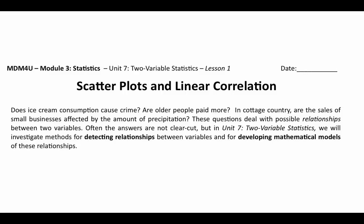Up until now, if you've been following along, we've looked at presenting and collecting data. We've looked at statistics of one variable, including measures of central tendency, dispersion, and relative position. And now we're moving into two-variable statistics, where we look at one set of data representing one variable and another set representing another variable, and the relationship between them. To begin this unit, we're talking about correlations — specifically linear correlation and scatter plots.